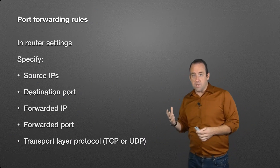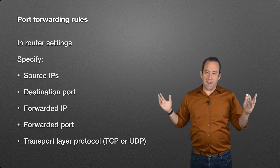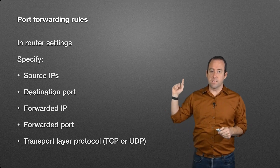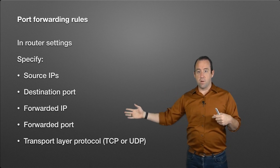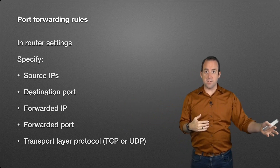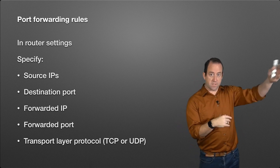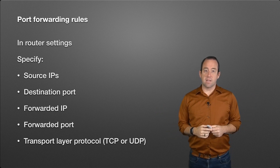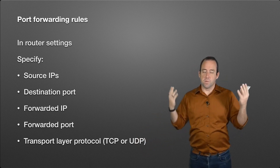To summarize what you configure in router settings: you specify the source IPs — usually 'any' or 0.0.0.0, though you can restrict to specific addresses. You set the destination port, meaning what port traffic is expected to arrive on. Then you specify the private IP address and port of the device inside the network running the service. Finally, you specify TCP, UDP, or both depending on the needs of the service.